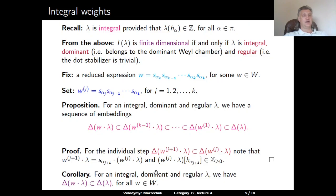One consequence is that for an integral dominant regular λ, the Verma module Δ(w · λ) is a submodule of Δ(λ) for any w in W. We are going to discuss which Verma modules are submodules of other Verma modules. For dominant regular λ, all potential Verma submodules — those with the same central character, i.e., of the form Δ(w · λ) — are indeed Verma submodules of Δ(λ).